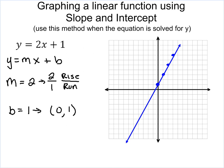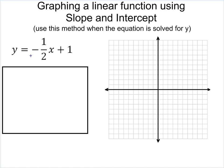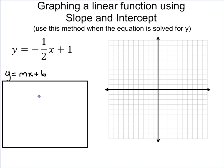Let's look at one more problem doing the exact same thing. In this case, we have y equals negative 1 half x plus 1. So we're still using the slope-intercept form of the equation, which is y equals mx plus b.